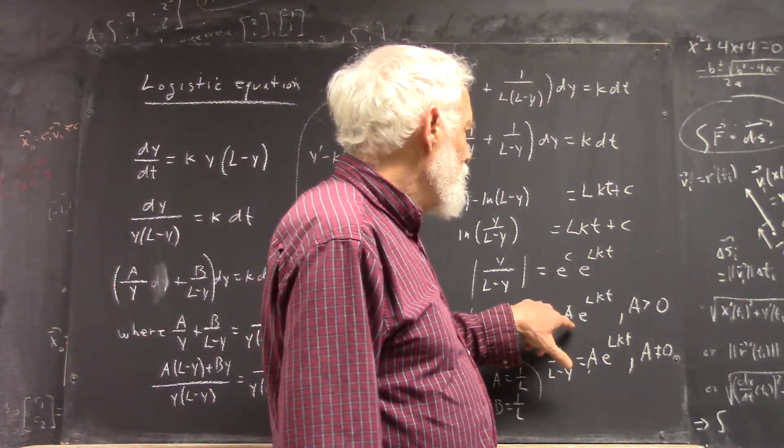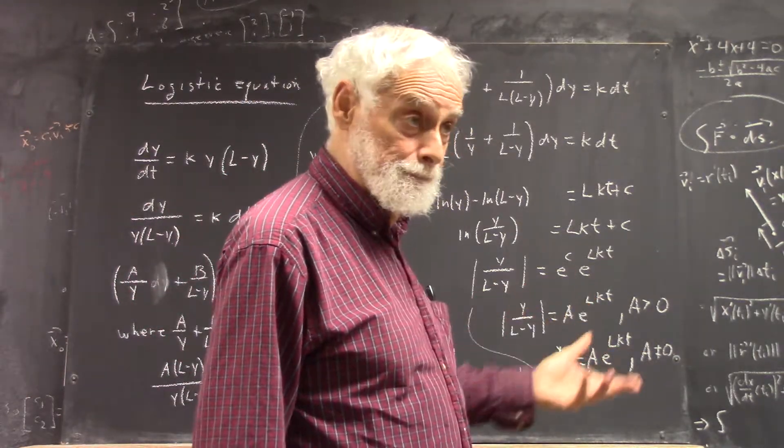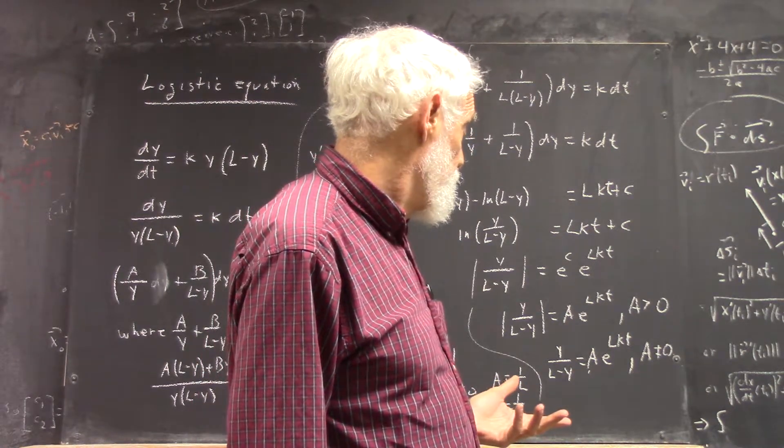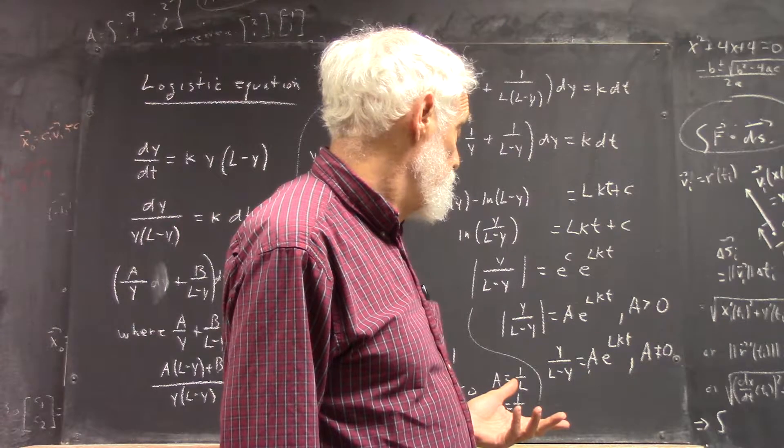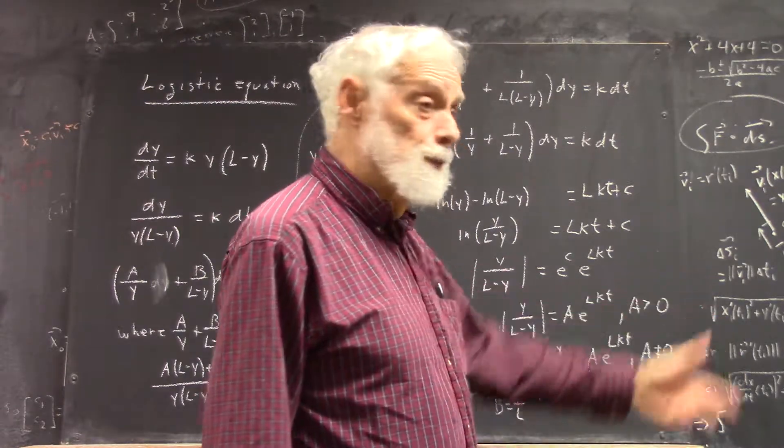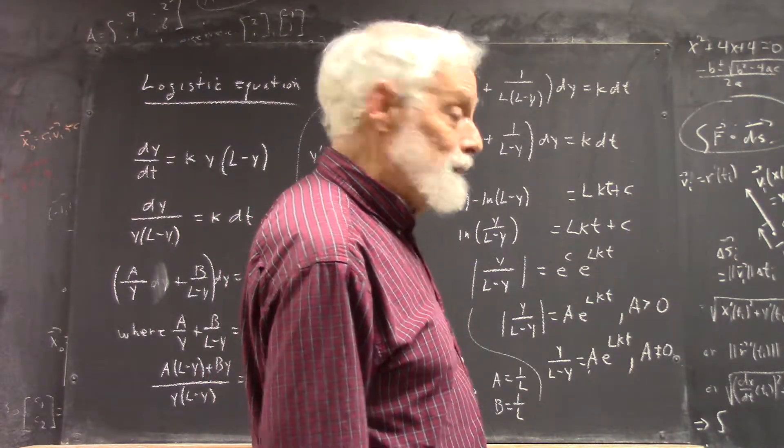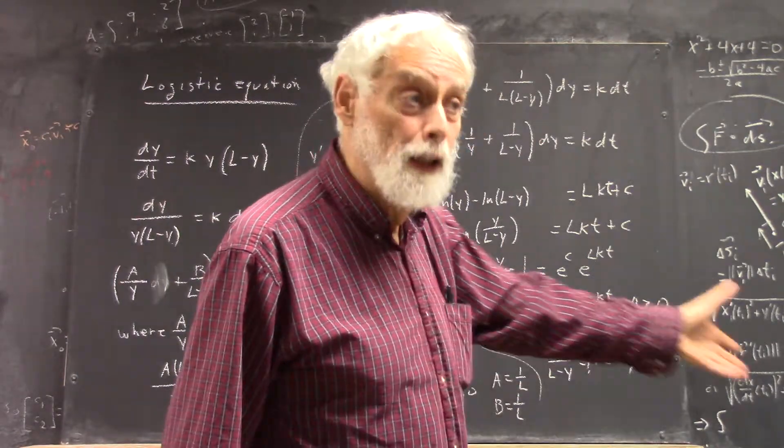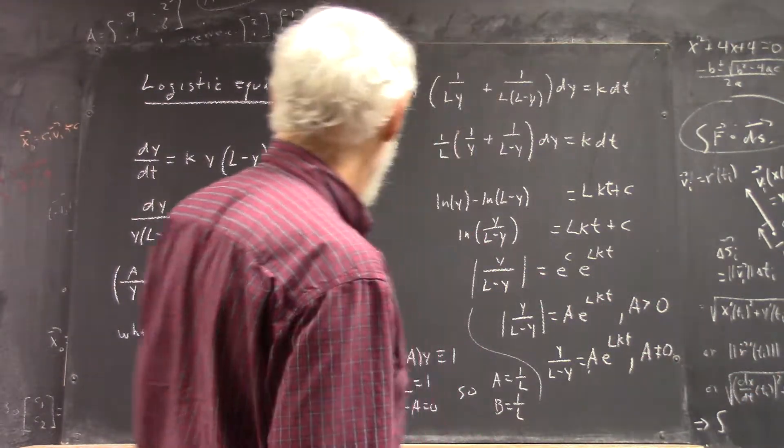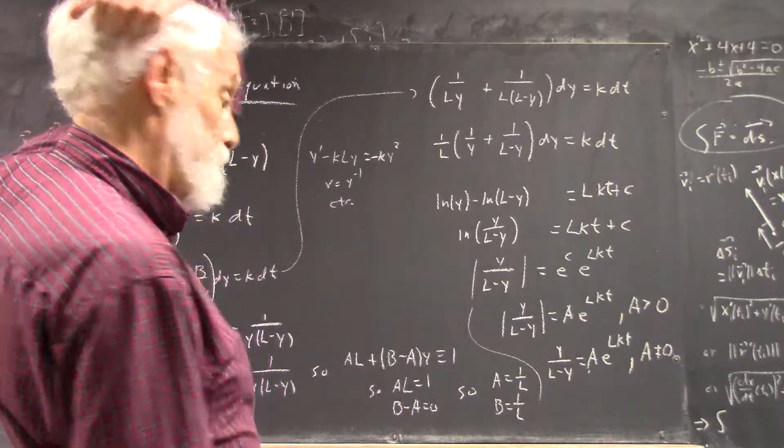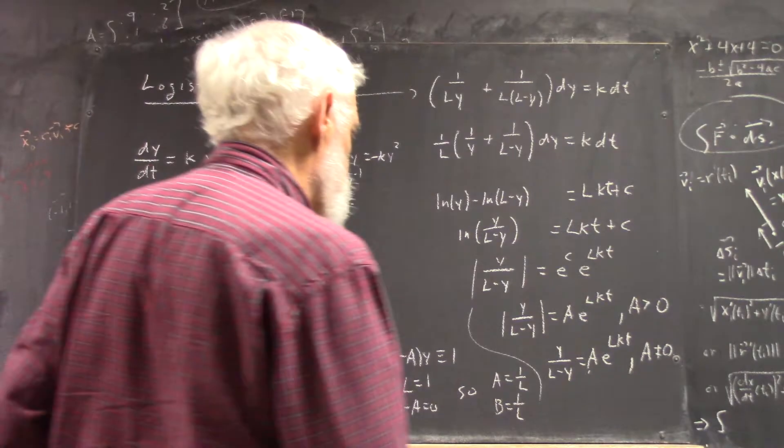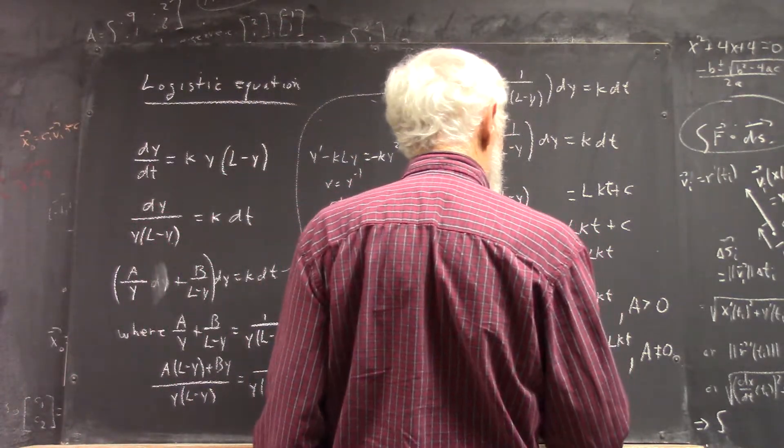If the absolute value is A e to the Lkt, so that would imply, where A has to be greater than 0, then this quantity is either plus or minus that, which still excludes A equals 0. Make sense?